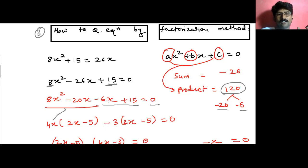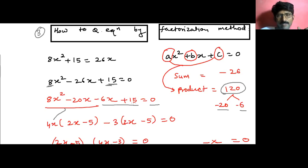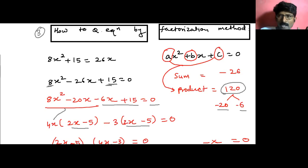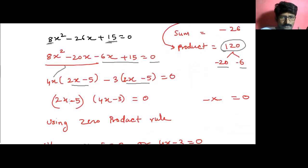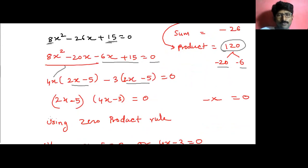Taking out minus 3 from the second group: minus 3 times 2x gives minus 6x, and minus 3 times negative 5 gives positive 15 — so inside the bracket we also get 2x minus 5, which equals 0. Now 2x minus 5 is common in both groups. Taking it out common, we get: 2x minus 5 times 4x minus 3 equals 0.